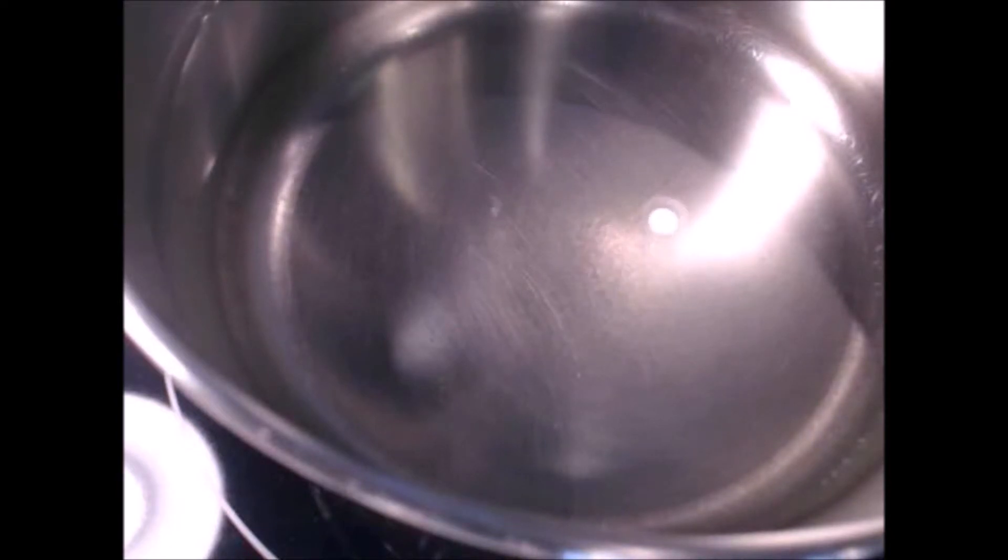The bottom of the stainless steel saucepan is hot and we see these striations due to the difference in the refractive index of the hot and cold water. There's a lot of agitation here because the water is very hot at the bottom. It's not uniform, so we see these refractive index striations.